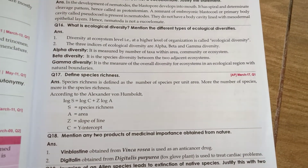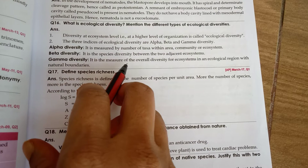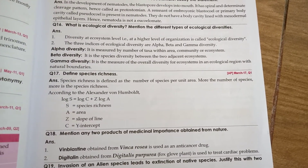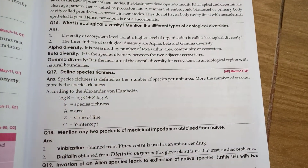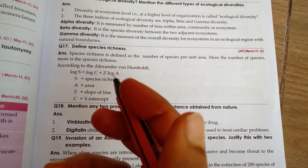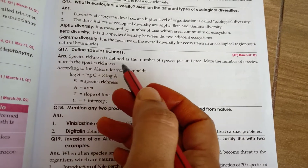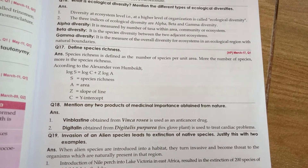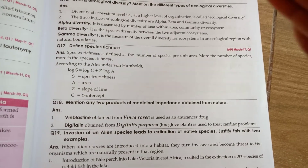Gamma diversity is a measure of overall diversity of ecosystems in an ecological area with natural boundaries. Species richness is the number of species per unit area — more species in an area means greater species richness.